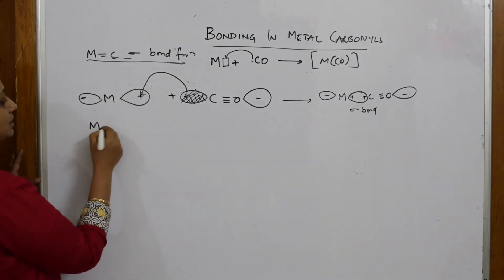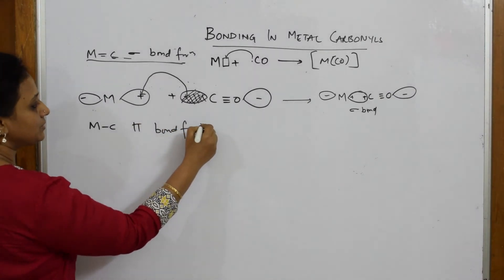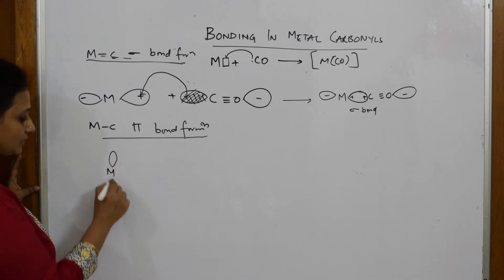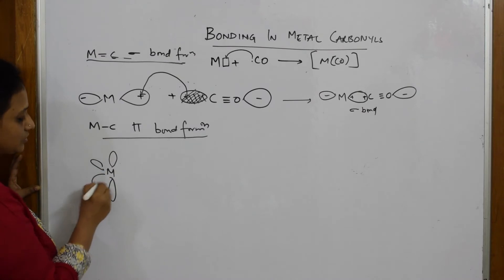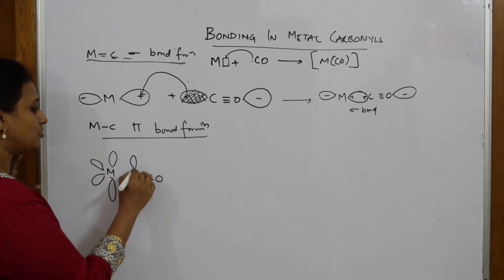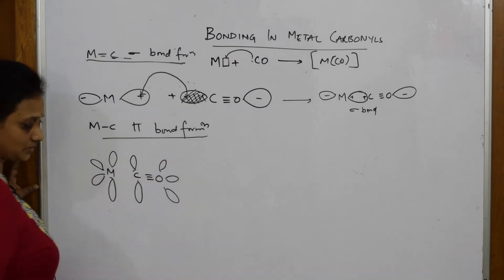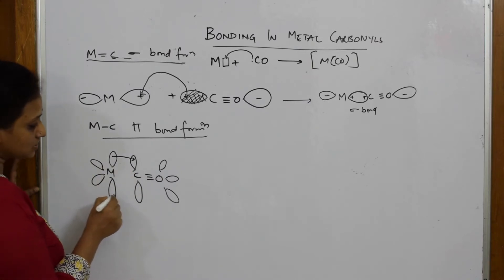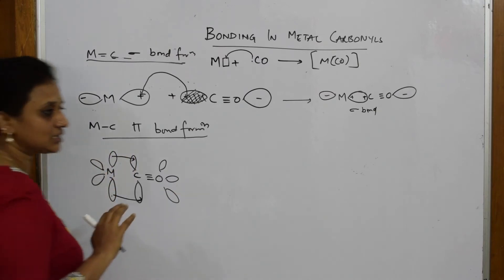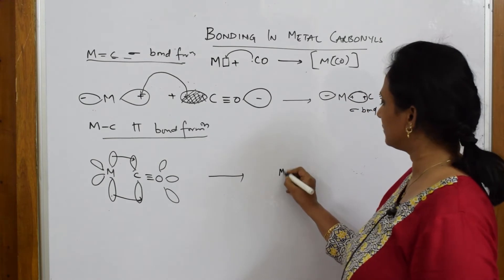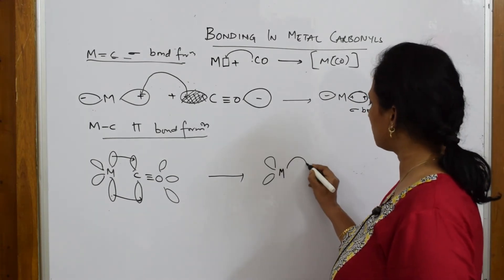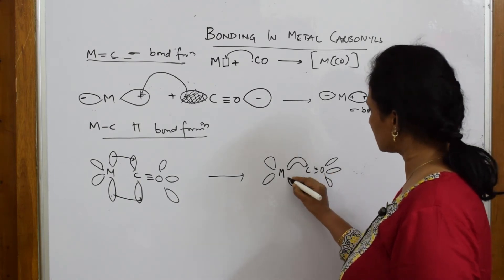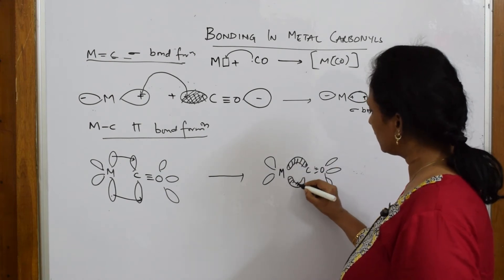Next important thing: metal carbonyl pi bond formation. So the pi bond of the metal — now if you are drawing on this side also, fine. The carbonyl group, oxygen — your pi bond of this. These are the pi bonds, and now shifting of pi electrons starts — back bonding starts. When the metal tries to donate electrons back to the carbonyl group, a pi bond is formed above and a pi bond is formed below.